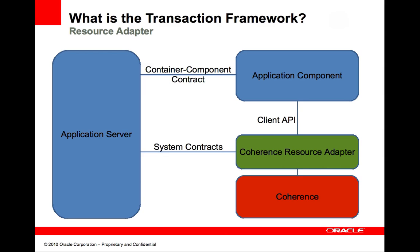The Coherence resource adapter plugs into the application server through a set of system-level contracts defined by the connector architecture. The Coherence side of the system-level contracts are implemented by the Coherence resource adapter. The resource adapter and application server collaborate to provide services such as global transaction enlistment, connection pooling, and connection sharing. The application accesses Coherence through the resource adapter using the normal Coherence client APIs.